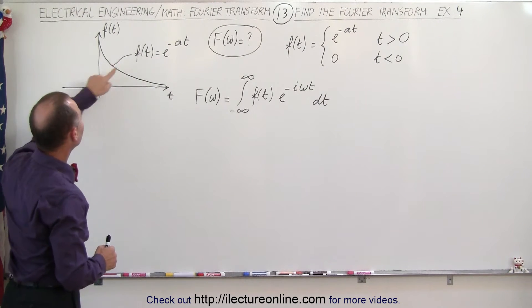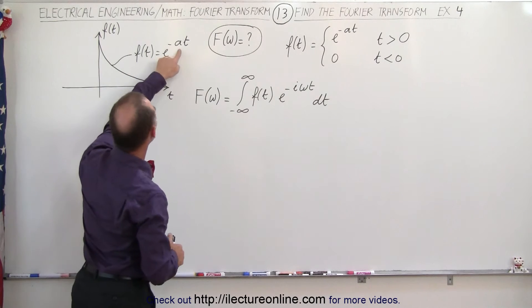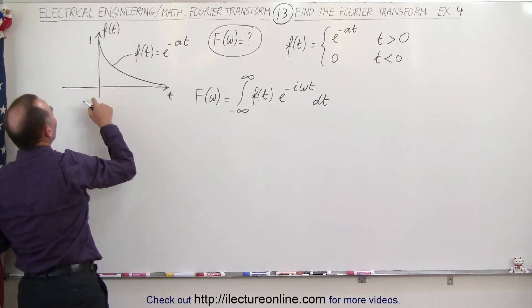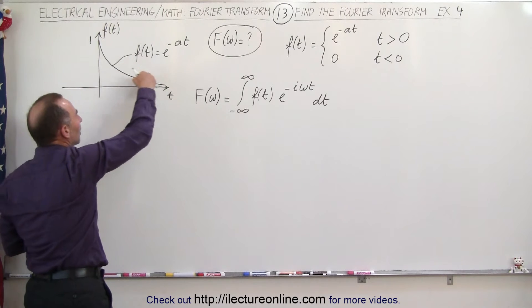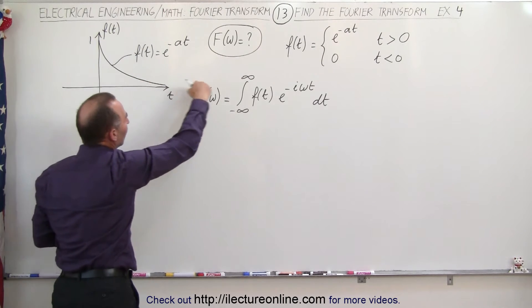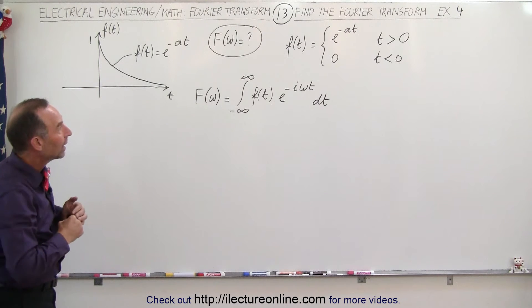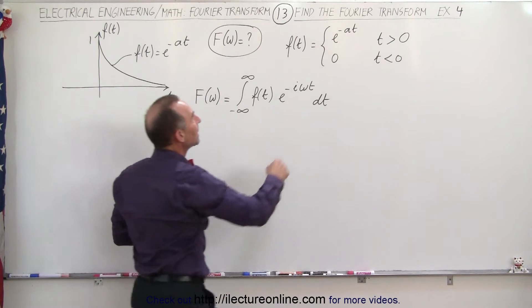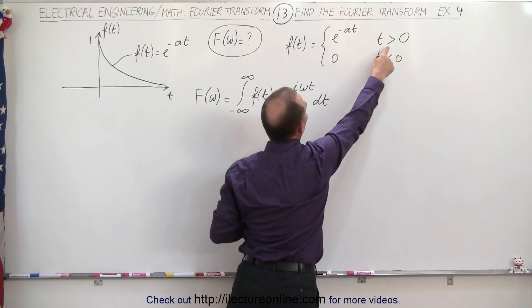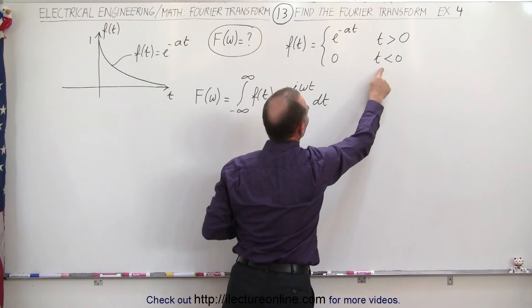First, when time is equal to zero, e to the zero becomes one, so we have an amplitude of one at time equals zero. Then there's an exponential decay and it goes off to zero as time approaches infinity. So we can define the function as being e to the minus at for times greater than zero, and zero for times smaller than zero.